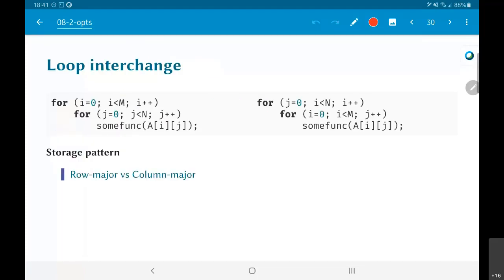Loop interchange is something which basically says that I look at these two loops. First, I have i and then I have j, whereas over here I have j and here I have i inside. And the question is internally, the same exact same function is being called. And the question that is being asked is, which one is better?